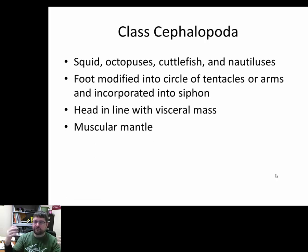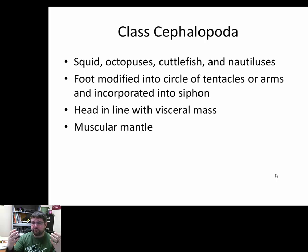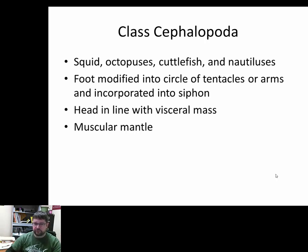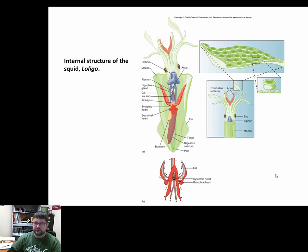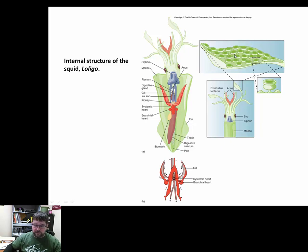The mantle is extremely muscular, and most cephalopods — except for nautilus — either have a very reduced shell or no shell at all. Making up for the lack of a shell is a strong, muscular outer surface — a muscular mantle. The internal structures are quite different from gastropods and bivalves.